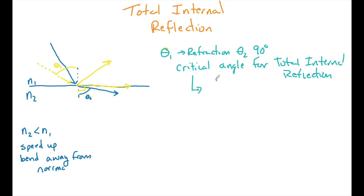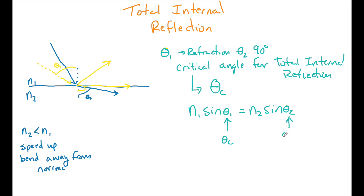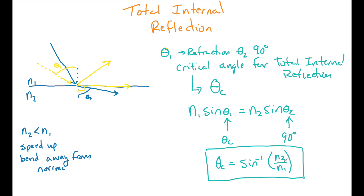Sometimes this is called theta sub c for critical angle, especially on the SAT. We solve for it using Snell's law: n1 sine theta1 equals n2 sine theta2. Setting theta2 to 90 degrees, and since sine of 90 degrees equals 1, we get that the critical angle equals the inverse sine of n2 over n1. This is how we find the critical angle when we know the index of refraction for two different mediums.